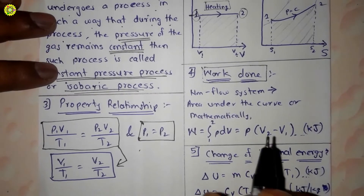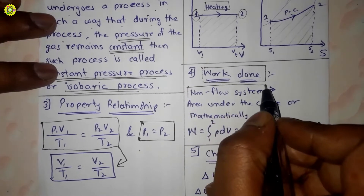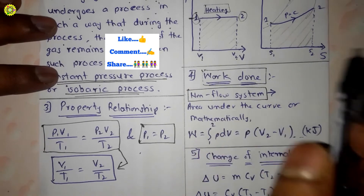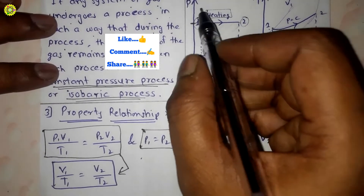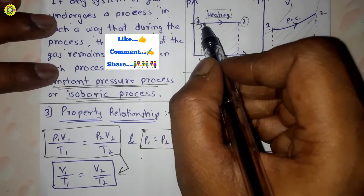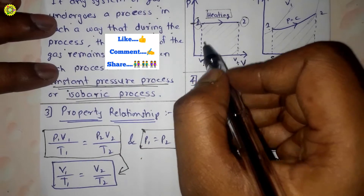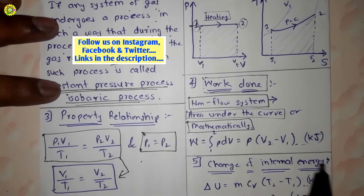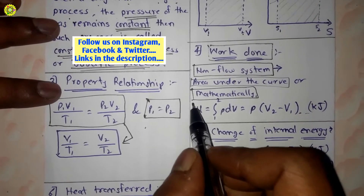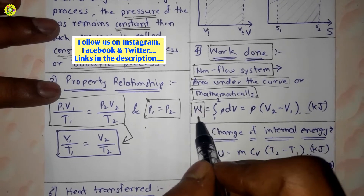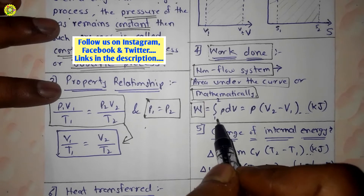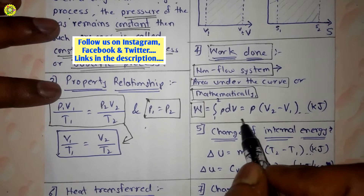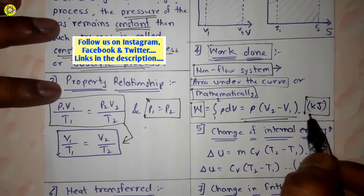For the work done in a constant pressure process for a non-flow system, we can calculate the work done by the area under the curve on the PV diagram. Mathematically, W = ∫₁² P dV, which equals P(V2 − V1), and its unit is kilojoule.